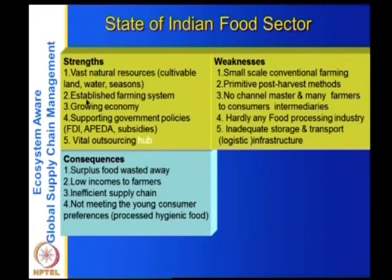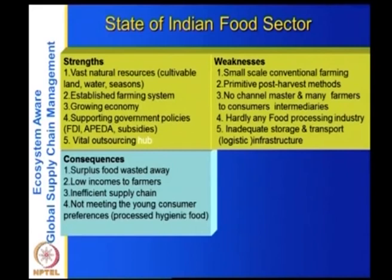The consequences of these weaknesses: surplus food is wasted. An article asks 'Can India be the food basket for the world?' — the answer is yes. India can supply food for all 6 billion people in the world, but we are wasting 30% of food, and farmers get only 20–25% of the final price. The supply chain is inefficient and is not meeting the preferences of young consumers.